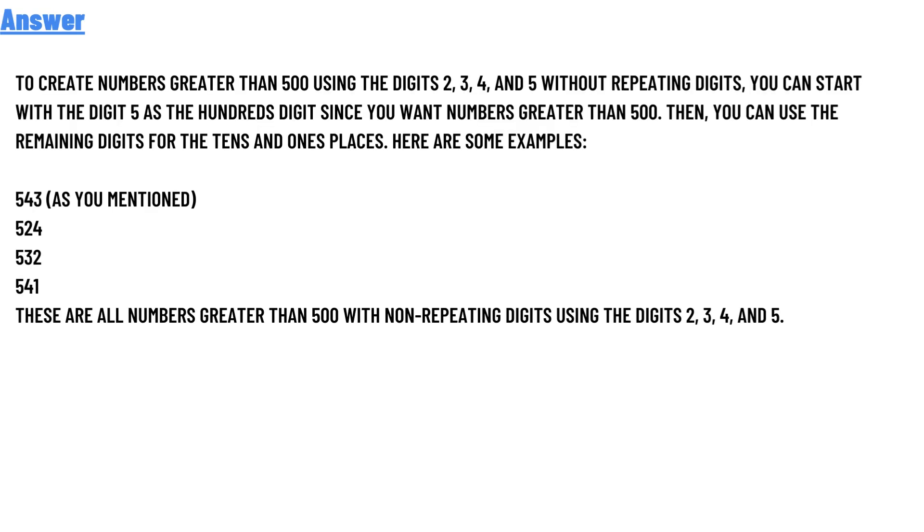To create numbers greater than 500 using the digits 2, 3, 4, and 5 without repeating digits, you can start with the digit 5 as the hundreds digit since you want numbers greater than 500. Then, you can use the remaining digits for the tens and ones places.